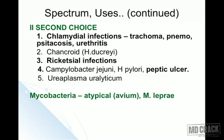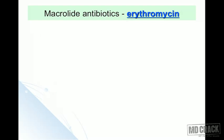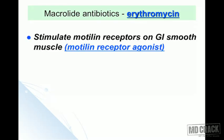One important organism mentioned separately is atypical mycobacteria — Mycobacterium avium complex as well as Mycobacterium leprae causing leprosy. Newer macrolides are useful for these conditions.